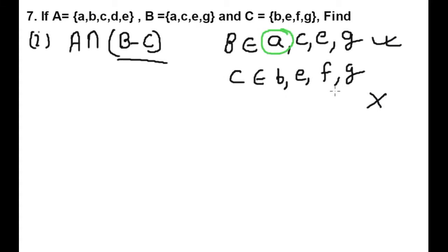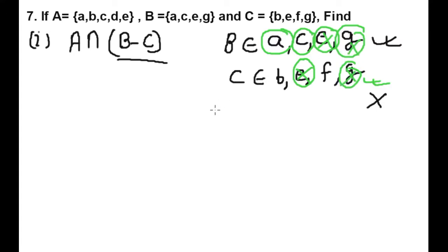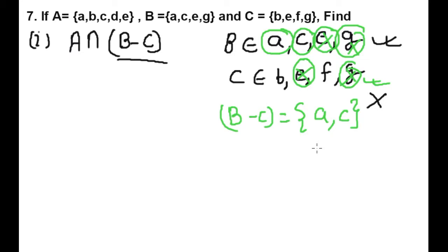A is in B but not in C. C is also in B but not in C. E — E is in both, so we will not take it. G — G is also in both, so it will not be our element. So what is B minus C? It is the set of elements which are only available in B.